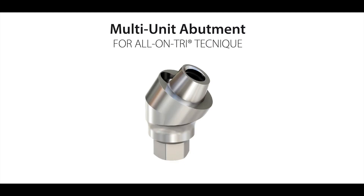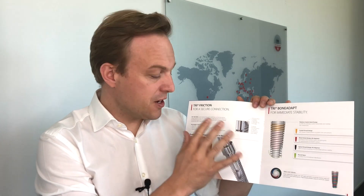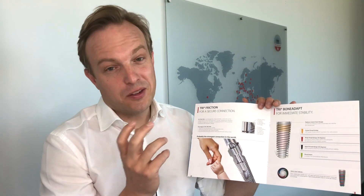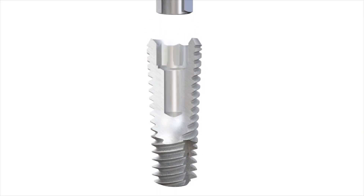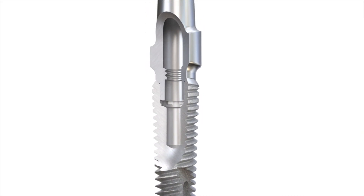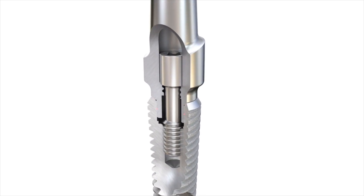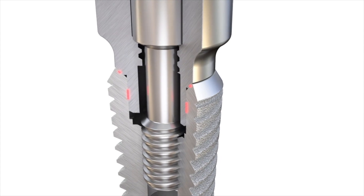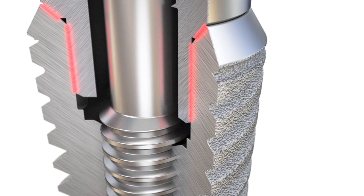The all-on-TRI abutment for all-on-four treatments, or the TRI base, which is patented and can be individualized to your needs. Now our connection, the TRI friction connection, is — as we like to say — probably the strongest connection in the world. It has a frictional internal hexagon connection for maximum rotational and axial stability, and on the top a 45-degree conical seal. When you place this, it is in there and it's really tough to get it out, which is great for long-term reliability and stability in working with your patients.